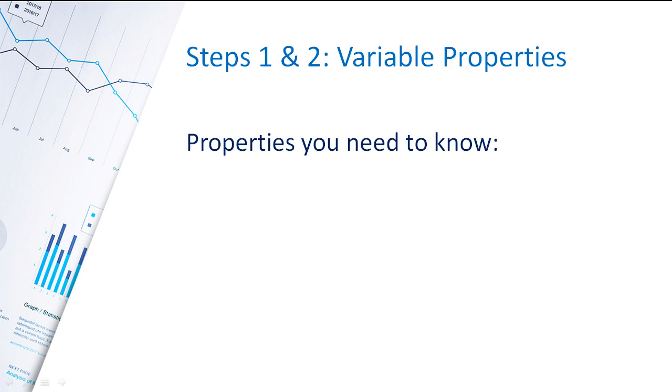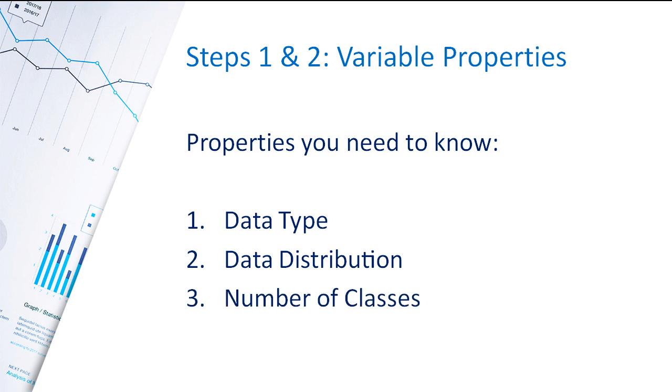Okay, in terms of the first two steps, your variable properties for your hypothesis variable and your predictor variable. What you need to know is the data type of these two variables. You need to know the data distribution and the number of classes. I'm going to go through these now.